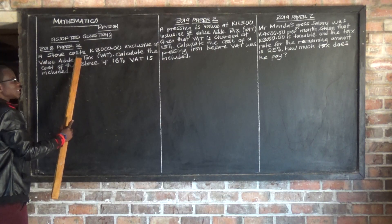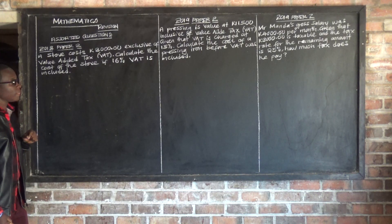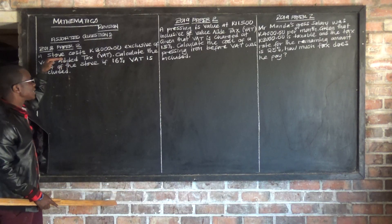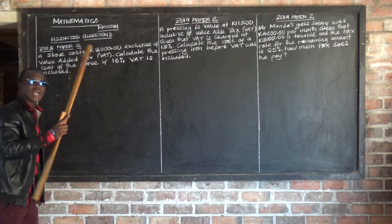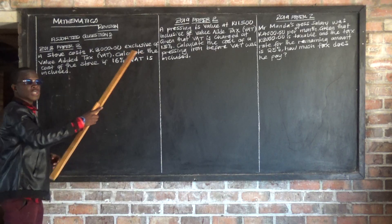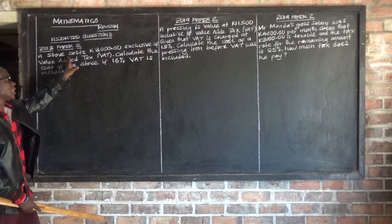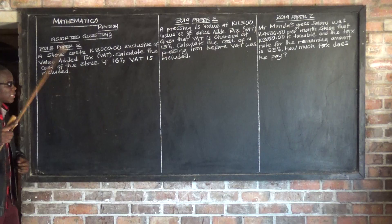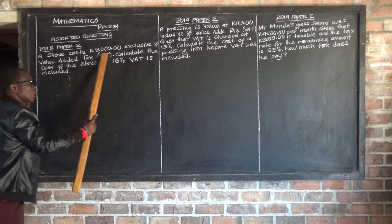So the stove costs 3,000. Exclusive means value added tax was not included. So exclusive of VAT means value added tax was not included in this 3,000. Now if they said a stove costs 3,000 inclusive of value added tax, that simply means this 3,000 includes value added tax. But in this case they are saying 3,000 exclusive of value added tax, meaning VAT was not included.